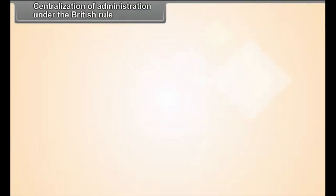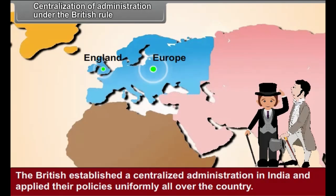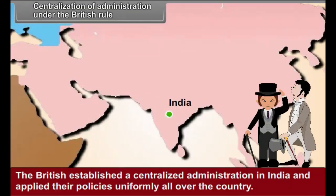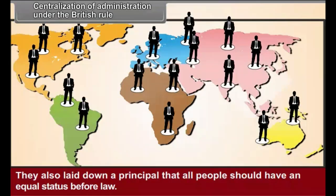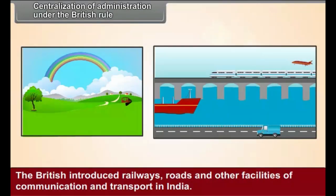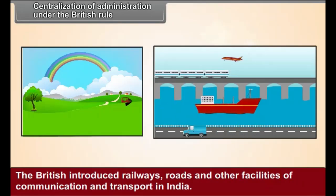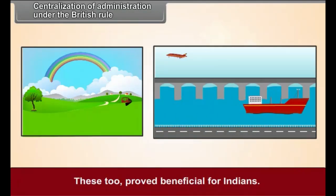Centralization of Administration Under British Rule: The British established a centralized administration in India and applied their policies uniformly all over the country. They also laid down a principle that all people should have equal status before law. The British introduced railways, roads, and other facilities of communication and transport in India. These proved beneficial for Indians, as people living in different provinces came into more contact with one another, leading to the development of a national feeling among them.